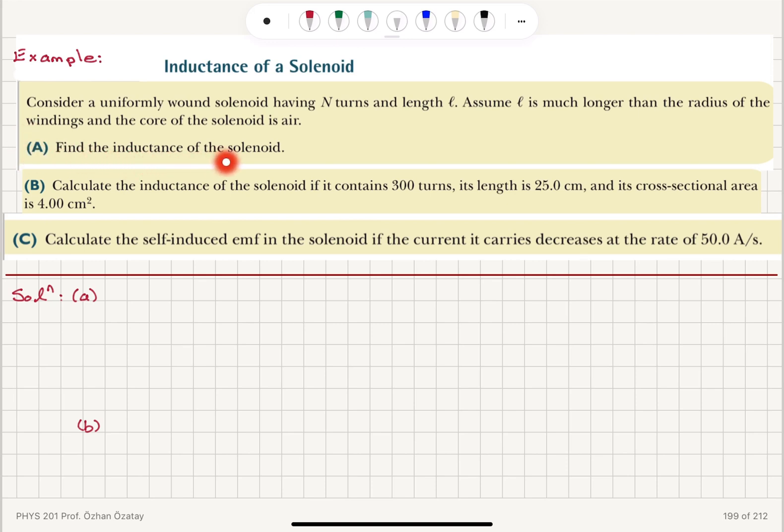Part A: Find the inductance of the solenoid. Part B: Calculate the inductance of the solenoid if it contains 300 turns, its length is 25.0 cm and its cross-sectional area is 4.00 cm squared.